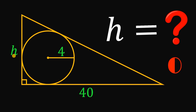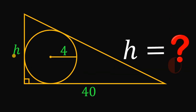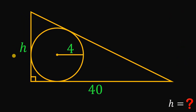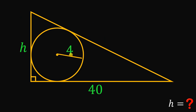Now let's answer this question together. I will show you two solutions to this kind of question. For our first solution, what we're going to do is move this radius right about here. If we draw a radius to a tangent line, that tangent line and the radius are perpendicular to each other.